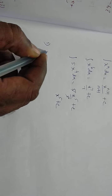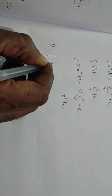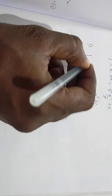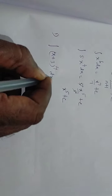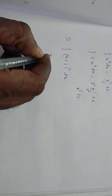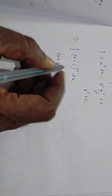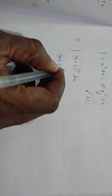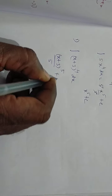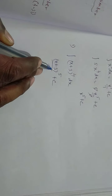The first sum is: suppose the integration of (x plus 3) the whole power 4 dx. Here, what is the concept? We apply the formula for (x plus 3) whole power n. So, 4 plus 1 is 5, giving (x plus 3) whole power 5 by 5 plus c. This is the answer.